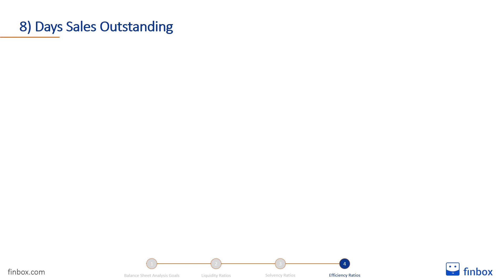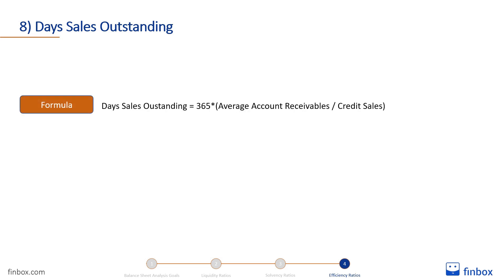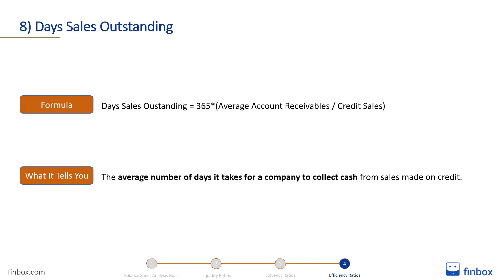Days sales outstanding is equal to the number of days in a year multiplied by average account receivables divided by credit sales. It tells you the average number of days it takes for a company to collect cash from sales made on credit. How many times do you hear the expression 'cash is king'? Well, this is exactly the case. Since a company cannot use the credit it holds to pay its expenses and invest in the business, it must collect the cash as quickly as possible.